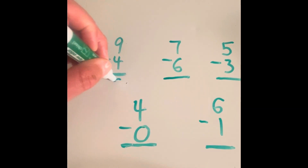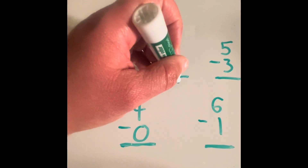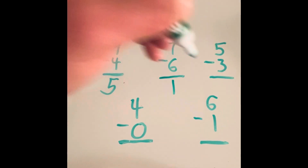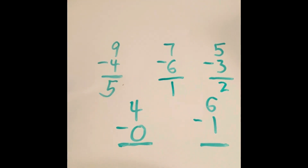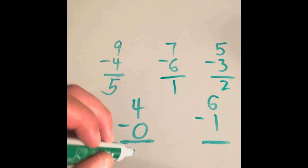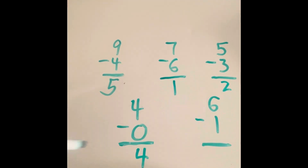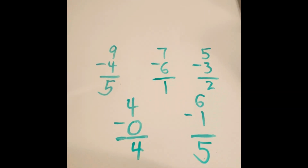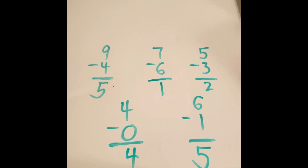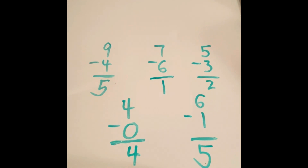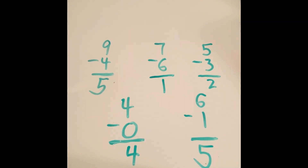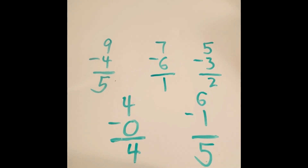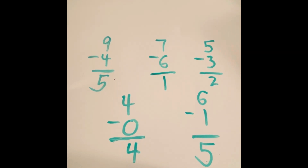The ultimate goal is to get fluent with one-digit subtraction as quickly as possible, and this is what that looks like: nine minus four equals five; seven minus six equals one; five minus three equals two; four minus zero equals four; six minus one equals five. If you can get to the point where you're that fluent with one-digit subtraction, it makes two-digit subtraction and three-digit subtraction a lot easier.